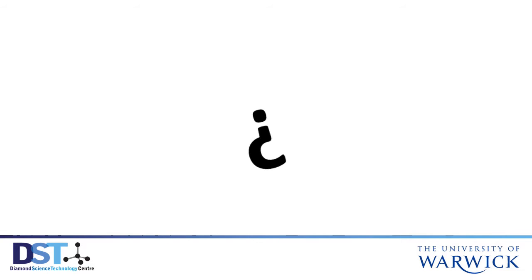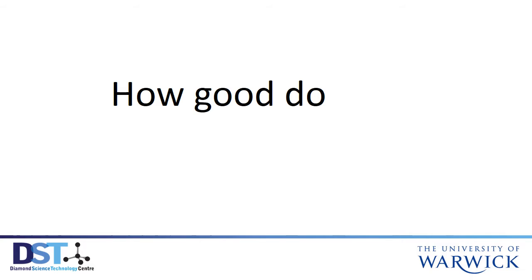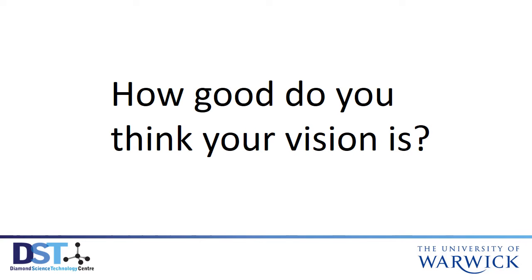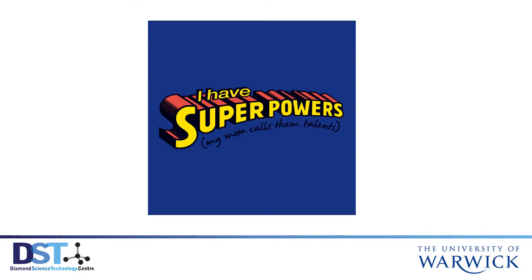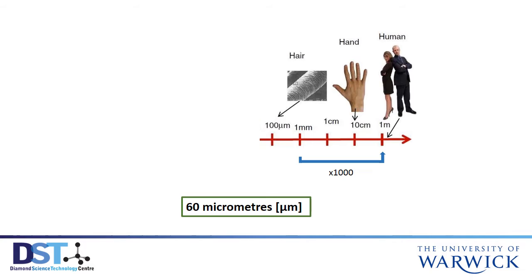Greetings. Let me begin by posing a question: how good do you think your vision is? Well, regardless of your answer, unless you are an as yet undiscovered evolutionary marvel, you cannot resolve anything smaller than about 60 micrometers. To put that into context, it means that we humans can see objects down to about the size of a hair, but not much further.